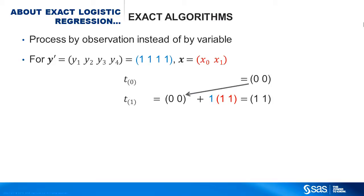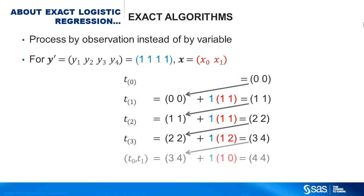What we just did was take the dot product of each y with each of the x. Instead, start with t sub 0 equals 0, 0. The first observation adds the first y times the first x vector, giving you 1, 1. The second observation adds the second y times the second x vector. The third observation adds the third y times the third x, and the last observation adds the fourth y times the fourth x, again giving you 4 and 4.